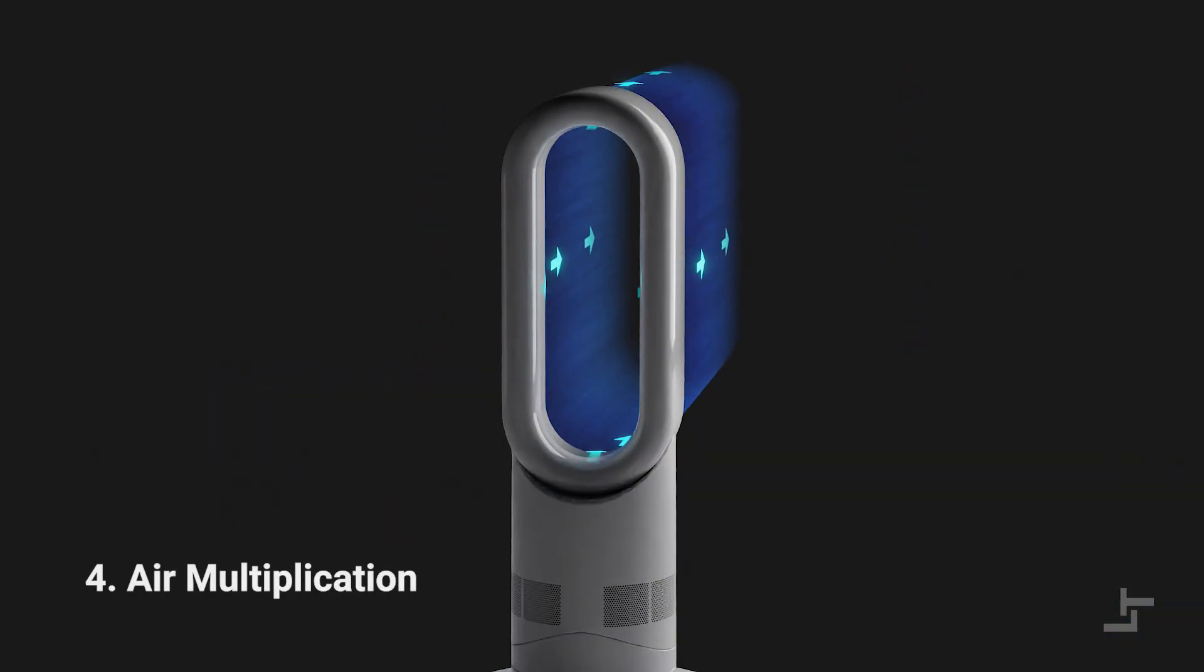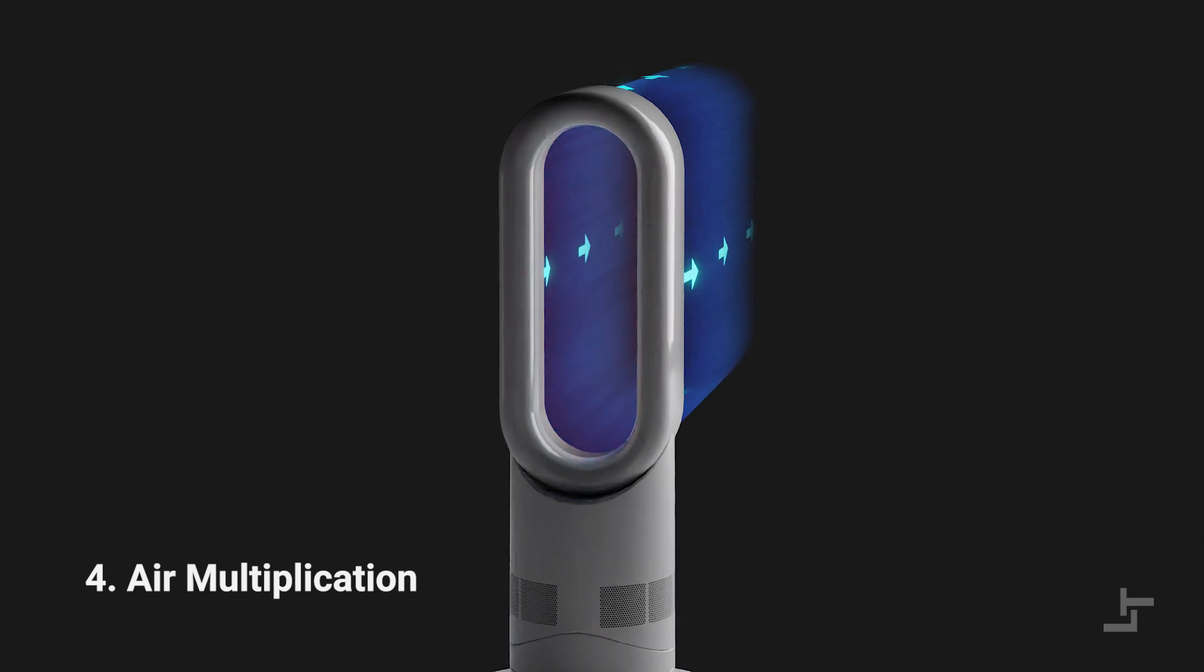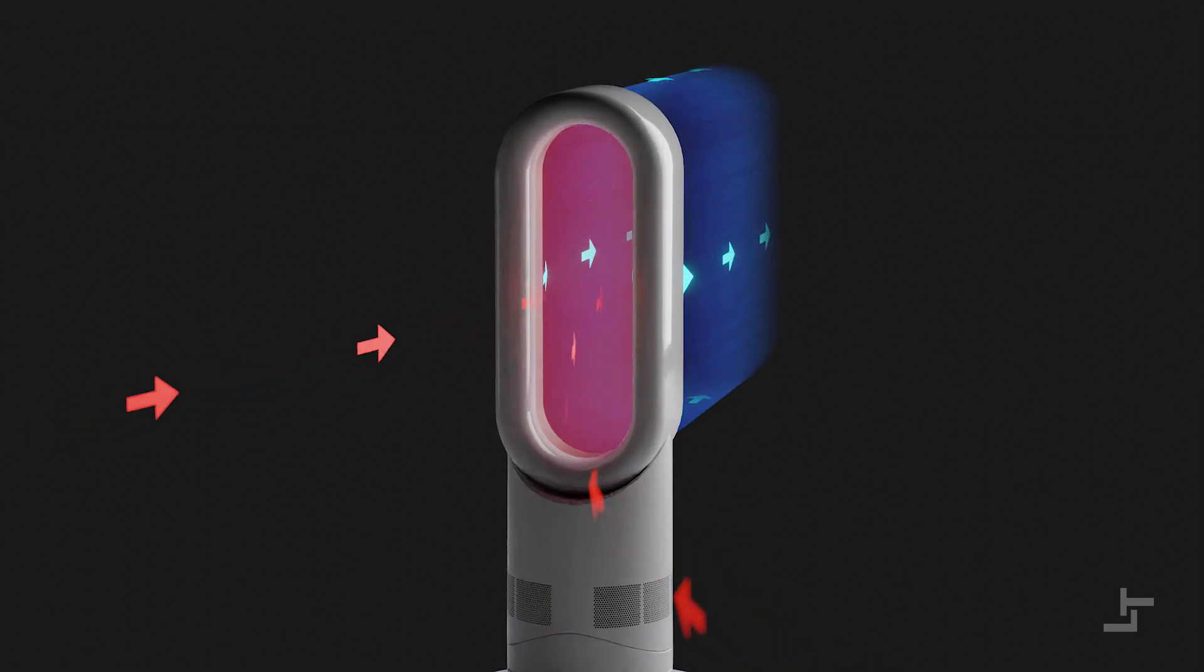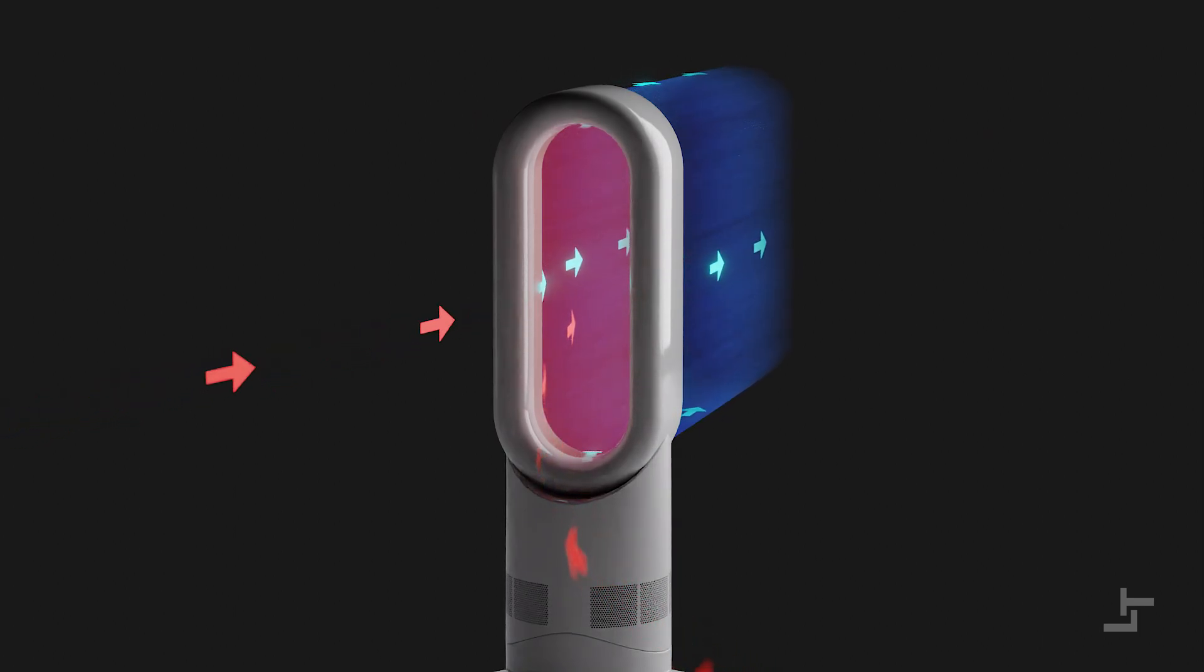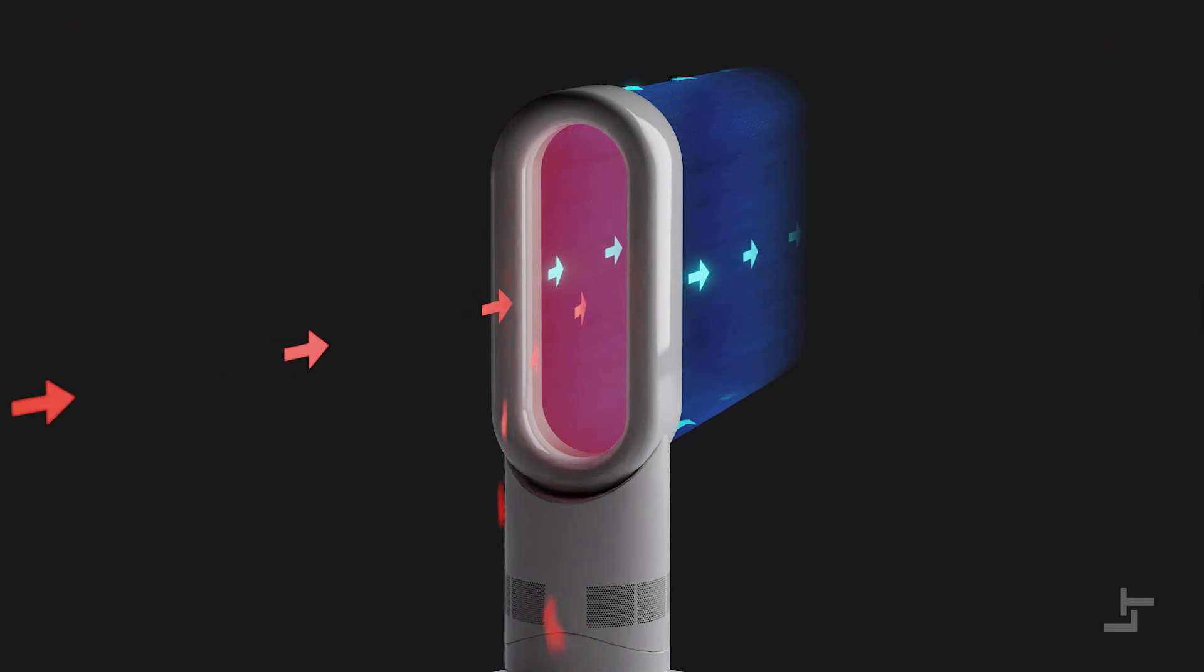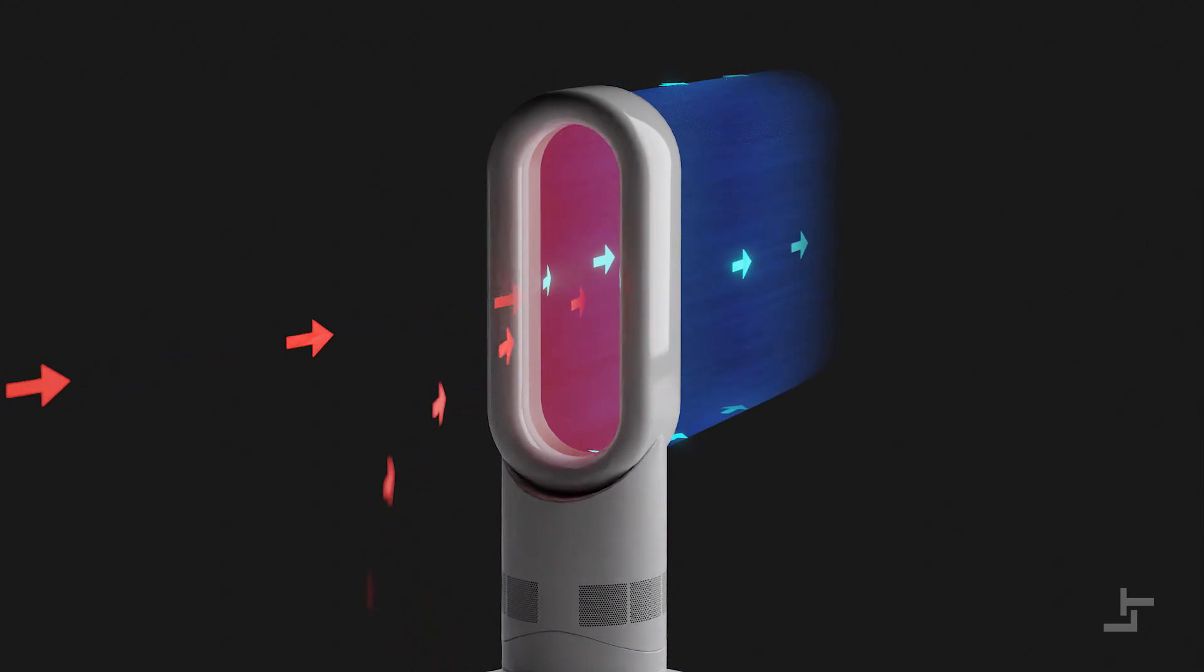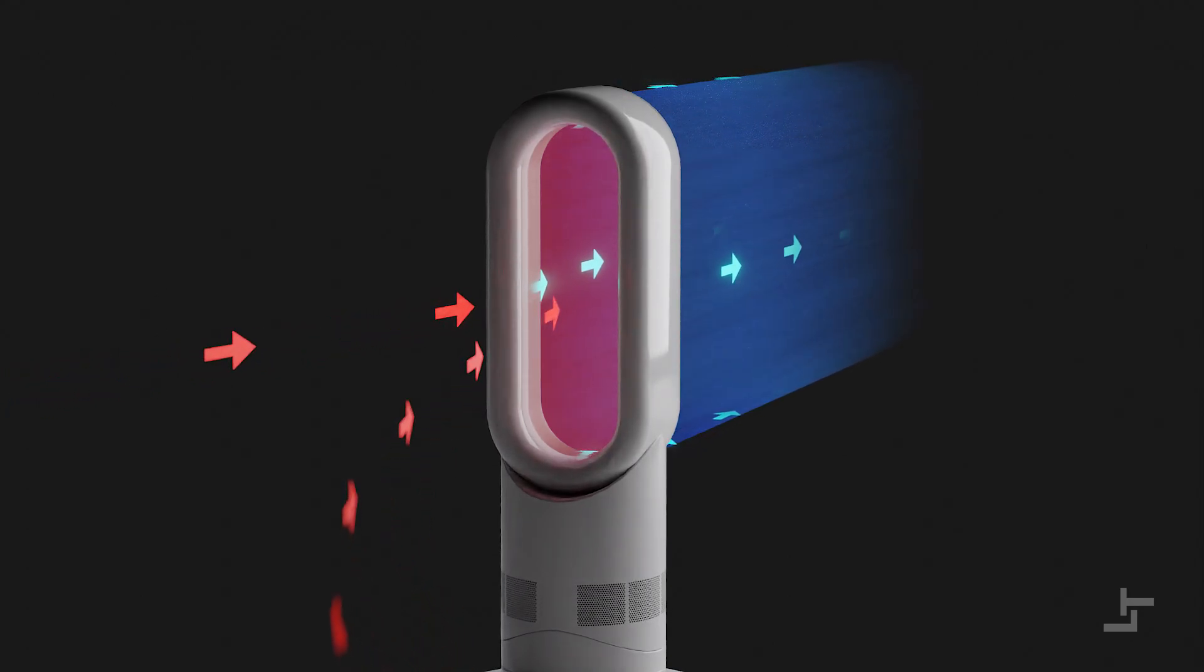Air multiplication: As the accelerated air continues to exit the aperture, it creates a low-pressure area around it. This low-pressure zone draws in additional air from the surrounding environment, driven by the pressure difference. This phenomenon is known as inducement, and it occurs because air naturally flows from areas of higher pressure to areas of lower pressure to equalize the pressure difference. This draws more air towards the low-pressure zone, creating a more intense breeze.